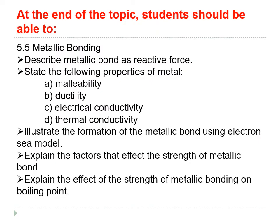Metallic bonding has properties of malleability, ductility, and electrical and thermal conductivity. We need to be able to illustrate the formation of metallic bonding using the electron sea model, and explain the factors that affect the strength of metallic bonding, which will also have an effect on the boiling points.